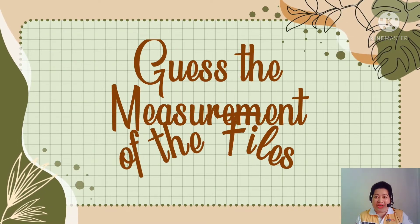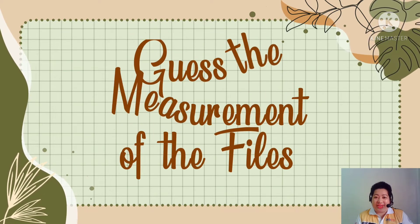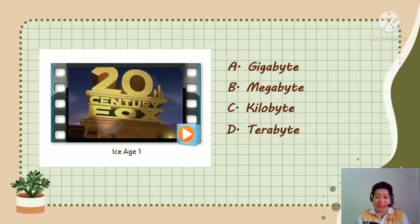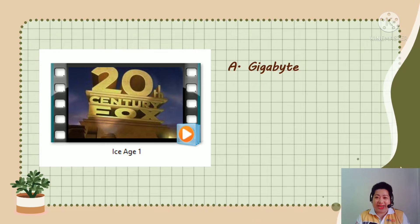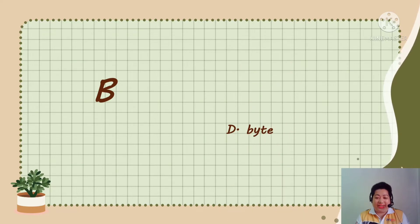Before we start with our lesson, let us first have an activity. The title of this activity is Guess the Measurement of the Files. What do you think is the measurement of this movie, Ice Age 1? The correct answer is Gigabytes. The second one, what do you think is the measurement of this character, Letter B? The correct answer is Letter D, Byte.